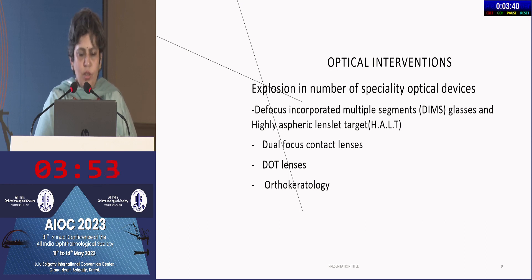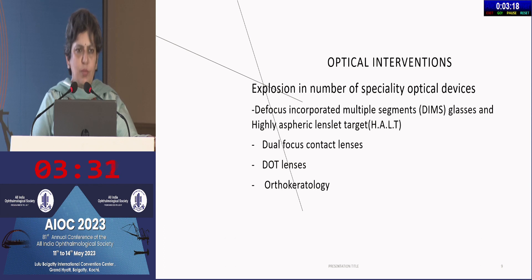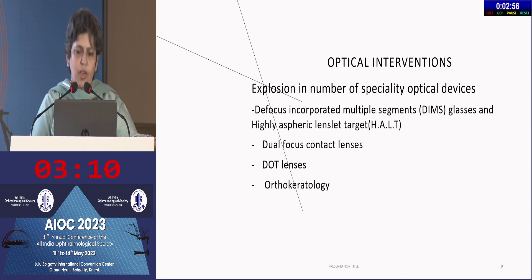There is also the dot lens, which does not produce a defocus but rather has translucent dots incorporated in the glasses that reduce contrast at the level of the retina, which is supposed to be protective against myopia. Coming to orthokeratology — this, along with low-dose atropine, seems to have the best results for myopia control. Orthokeratology involves a specially designed contact lens worn overnight to flatten the central cornea and produce peripheral steepening, which creates a defocus and works similarly to other optical interventions.